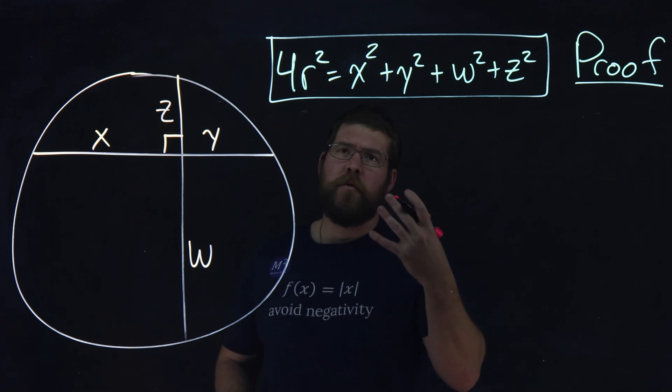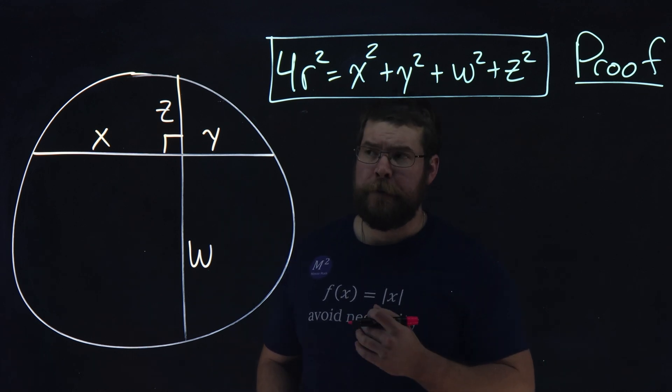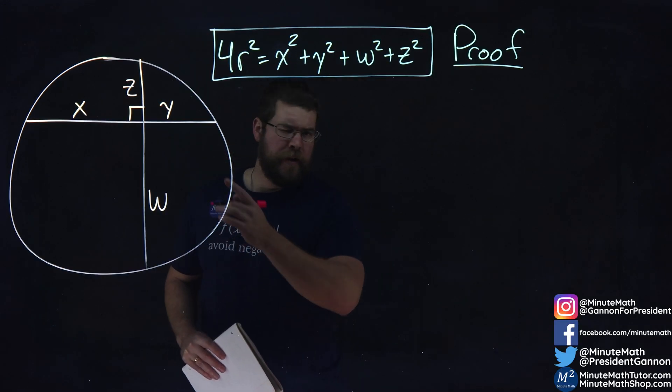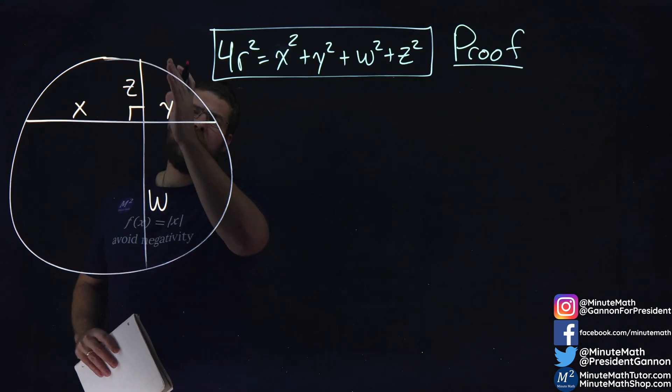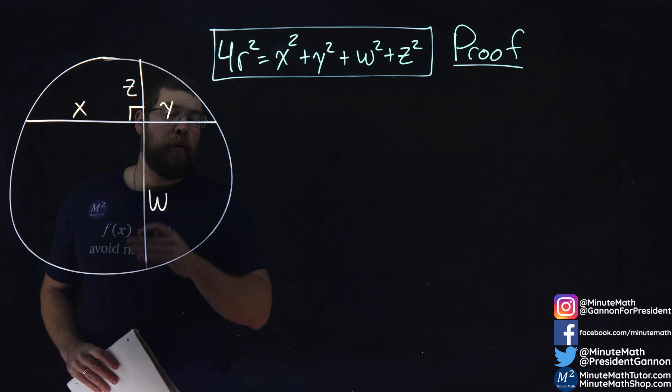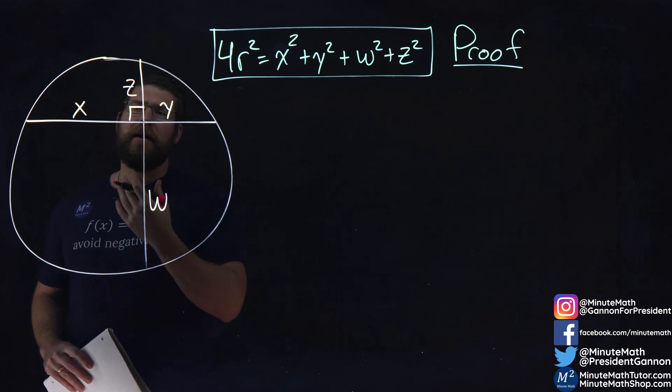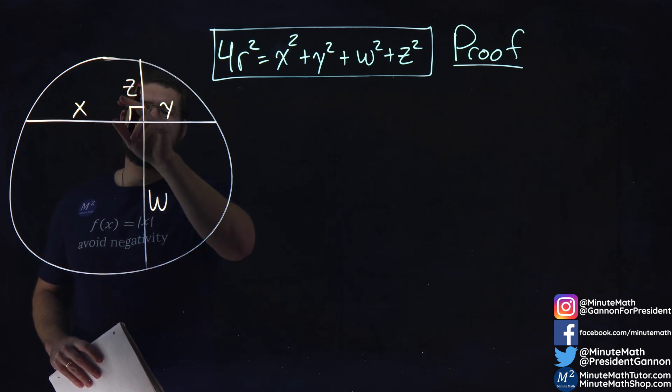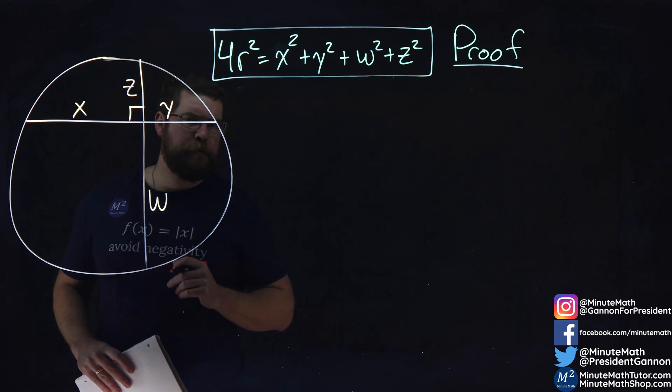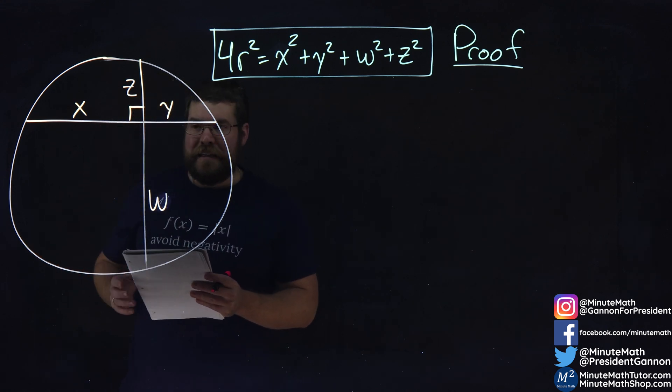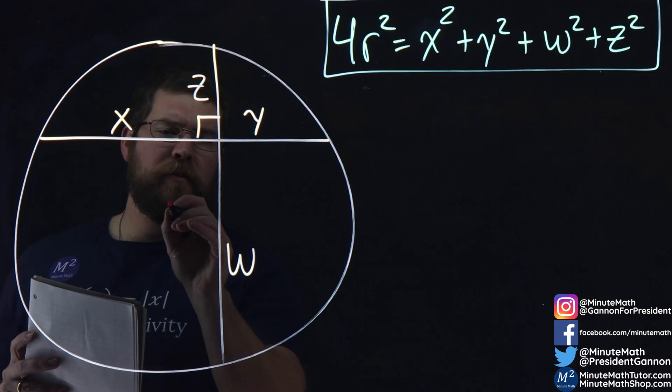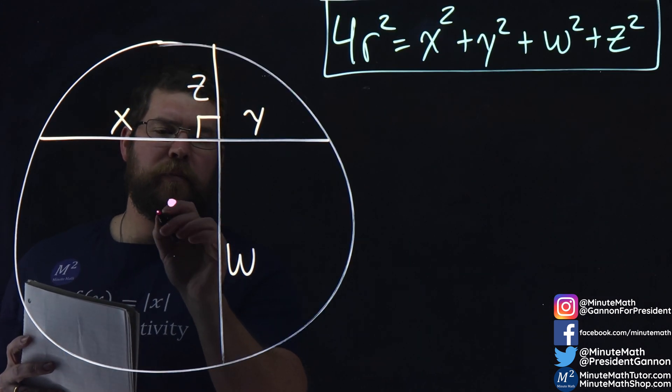I'm going to show you the proof for that formula here. We have a circle, and it has two chords that are perpendicular to each other, and we separate them by lengths of x, y, z, and w. We don't know what the radius is, so let's call it r. We have the center of the circle, let's call it point O.